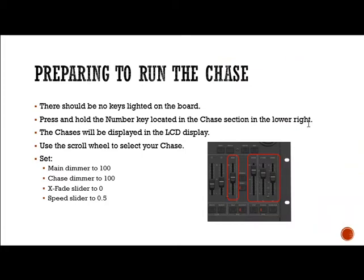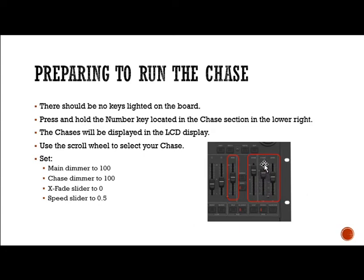When you want to run the chase, there should be no lights on the board — all the lights should be off. We press and hold the number key located in the chase section. We press and hold it and that will light up our chase menu. We select which chase we want using the scroll wheel, then set our maximum dim up to 100, chase dimmer up to 100. Our crossfade up here is very fast at zero; down here is 10. So we're going to put it to zero because we want to test it, and our speed slider to 0.1.